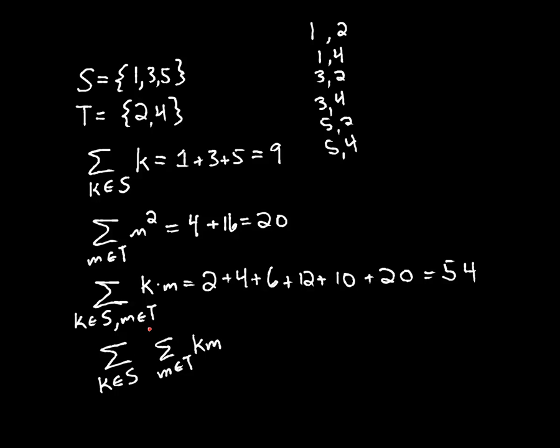And what this means is I'm summing this. This is going to be my term for each value of k. Well, we know that constants can pull through. And when I'm summing over m, k isn't changing. So this looks like the sum over all k in S of k times the sum over all m in T of m.